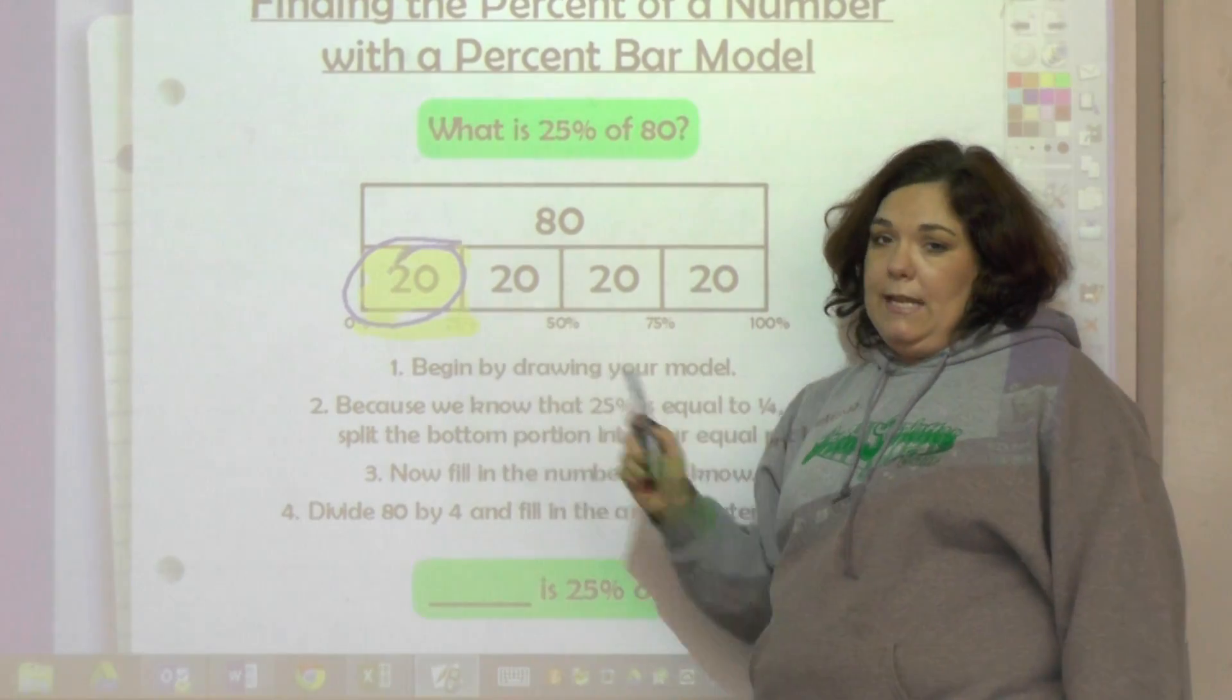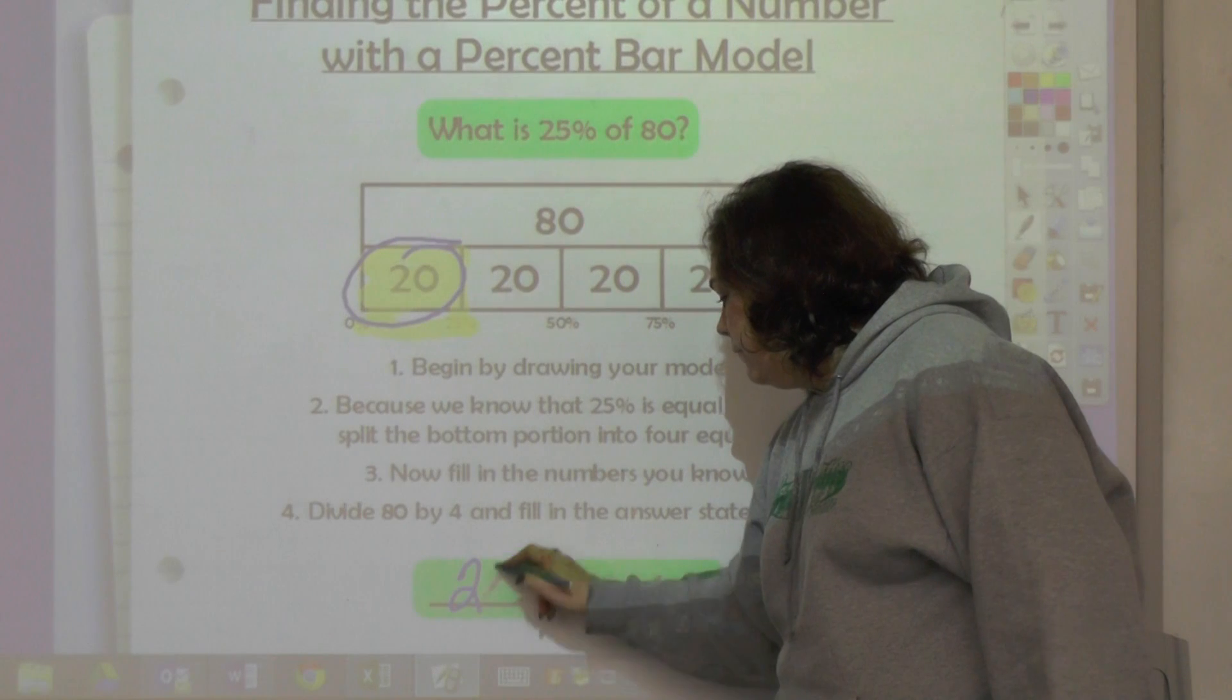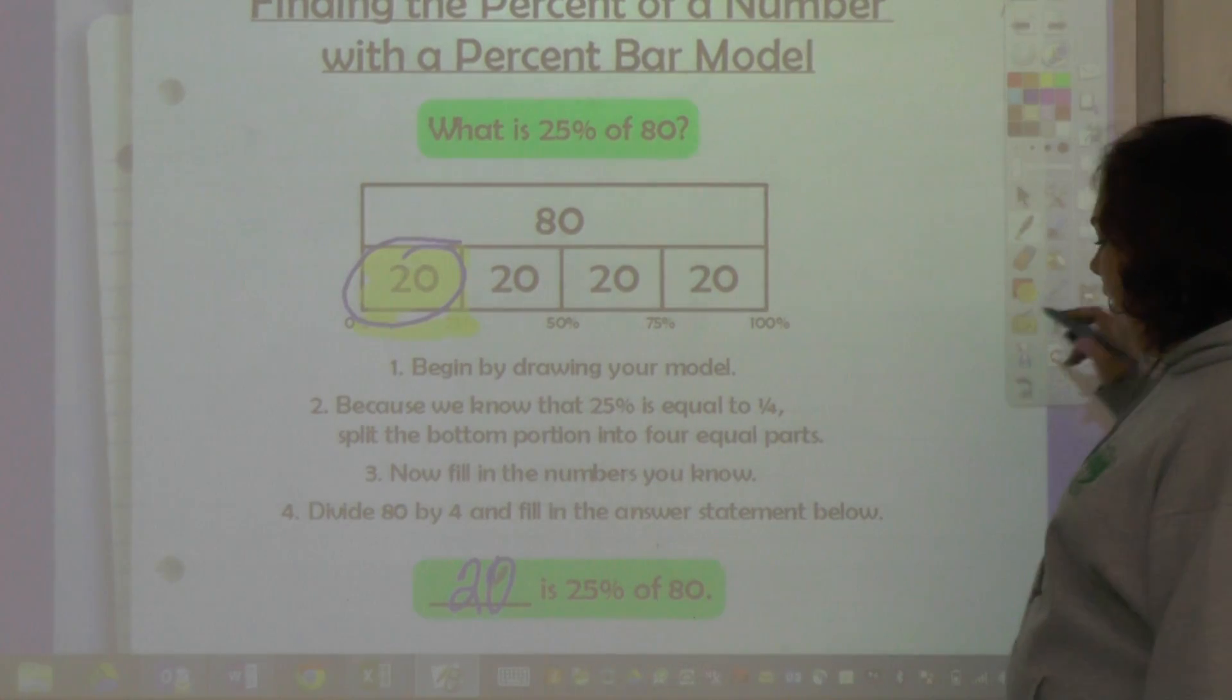So the answer to 'what is 25% of 80?' - without really doing any calculations, all that you've done is divide 80 by 4, which is 20. So 20 is 25% of 80.